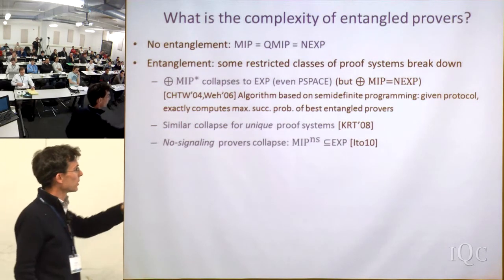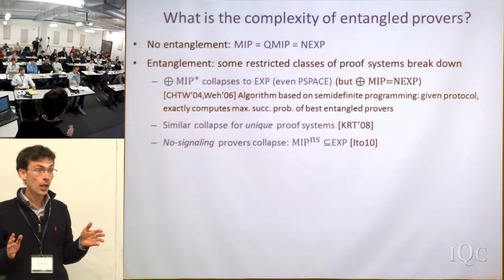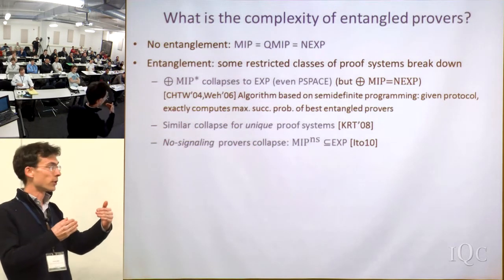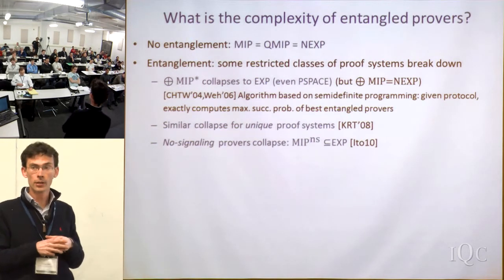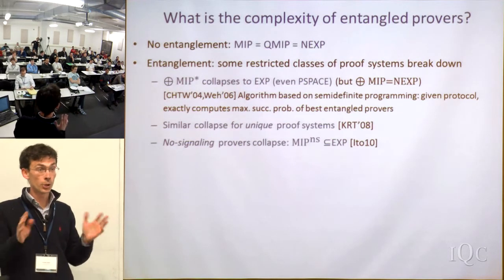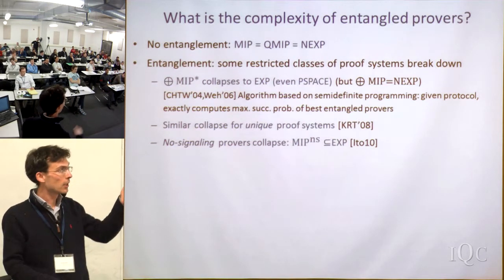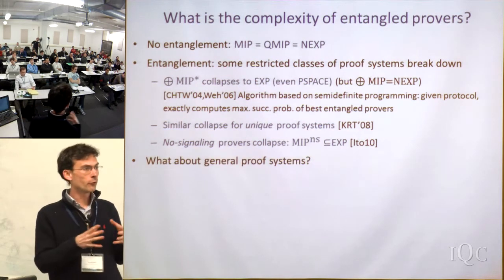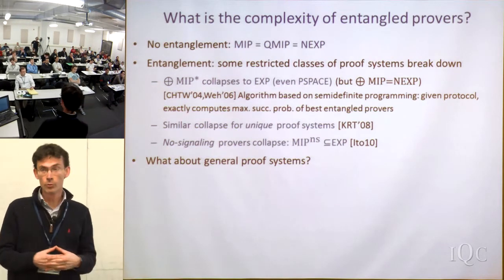There's another result by Kempe, Regev, and Toner showing a similar collapse for proof systems with a unique property — slightly more general, but again entanglement causes the complexity class to collapse. And Ito showed that if you allow provers with arbitrary no-signaling strategies — even more power than entanglement, but still no communication — then the corresponding class again collapses to EXP. So we have all these collapses either from restricting the verifier or increasing the power of the provers.